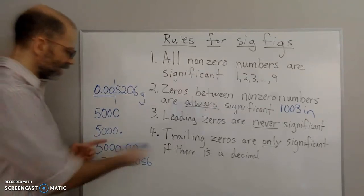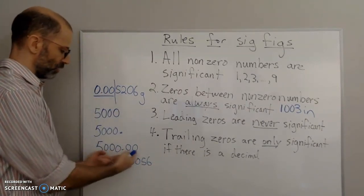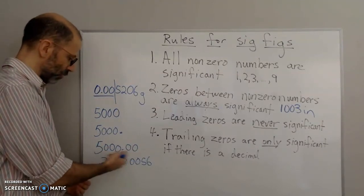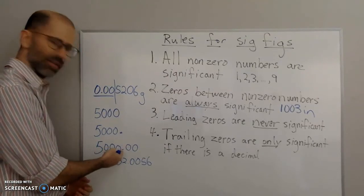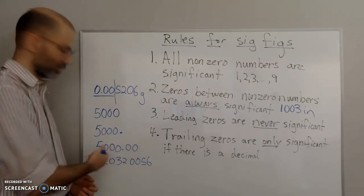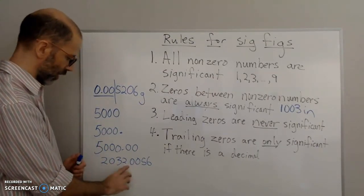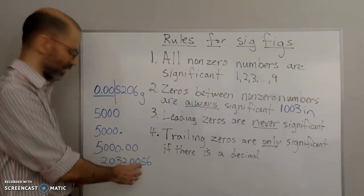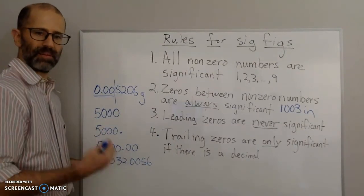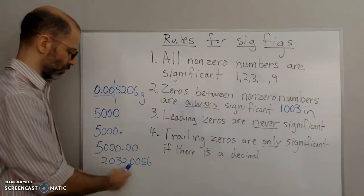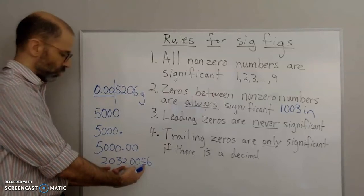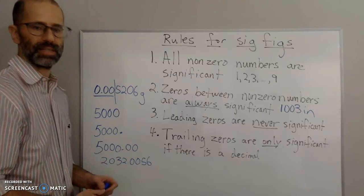This is why I say if there's a decimal, it doesn't matter if the zeros are to the right or to the left — if you have a decimal, it's going to be significant. For 5,000 with a decimal shown, all zeros are significant: six significant figures total. Also, consider 2,000.0056 — these zeros are not trailing zeros, they follow the decimal and are to the right. We have a decimal, so those zeros are significant. Also, those two zeros fall between two non-zero numbers, so they are significant by rule two as well.